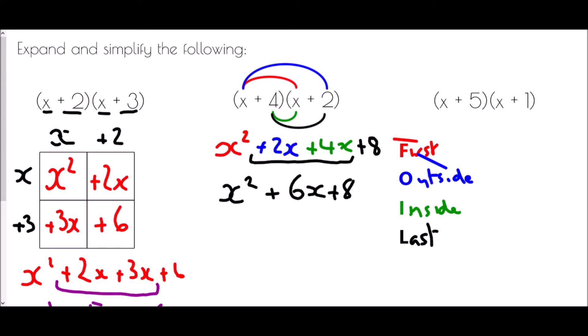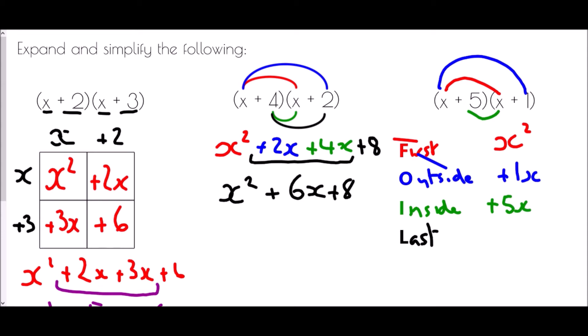First means we multiply the first item in the first bracket by the first item in the second bracket: x times x is x squared. Outside means x times plus one, which is plus one x. Inside means plus five times x, which is plus five x. Last means plus five times plus one, which is plus five. You'll notice FOIL produces the same claw shape as the middle example — they're actually the same method.